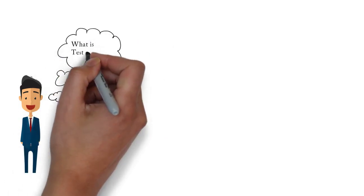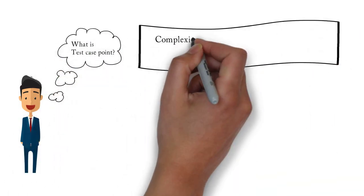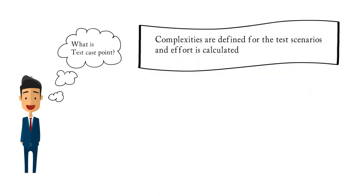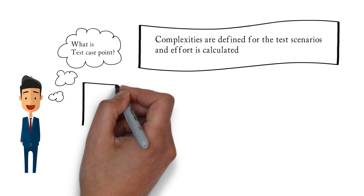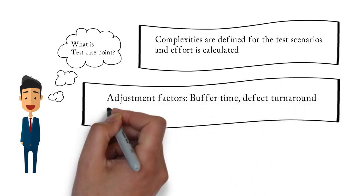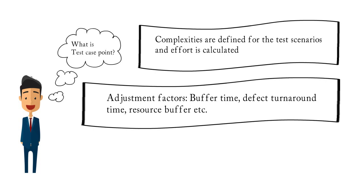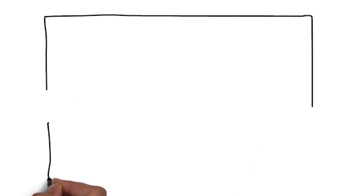The next technique is test case point analysis. Here we define complexities for the test scenarios that we have written, and effort is calculated for the test scenarios. In functional point analysis, complexities are defined for functionalities and functional points are calculated, but in test case point analysis, complexities are defined for test scenarios and test case points are calculated. In both techniques, adjustment factors like buffer time, defect turnaround time, and resource buffer can also be considered.